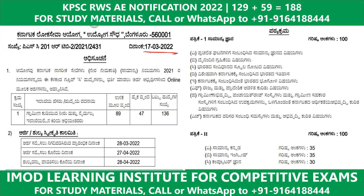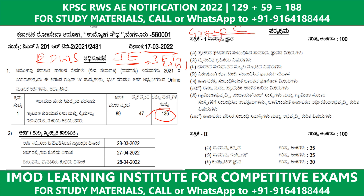Next notification is for the RDWS Department Junior Engineer post, where both BE Civil and Diploma candidates can apply. Total 103 posts. The exam pattern — Group C — is the same exam pattern. Paper 1 is General Studies, which is the same, with 3 additional subjects.